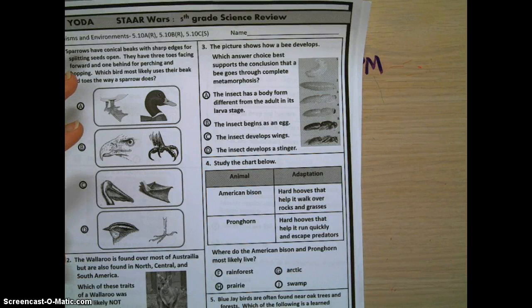A, the insect has a body form different from the adult in its larva stage. B, the insect begins as an egg. C, the insect develops wings. D, the insect develops a stinger.